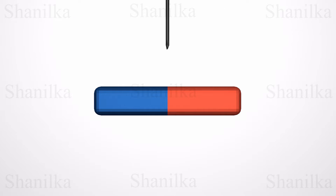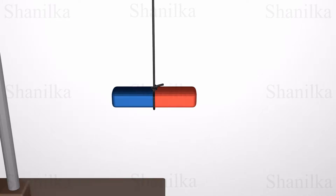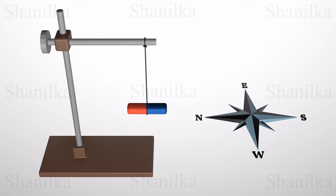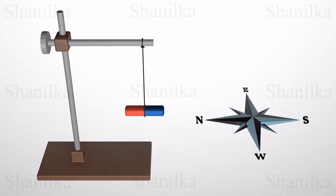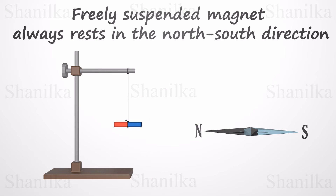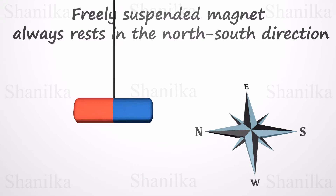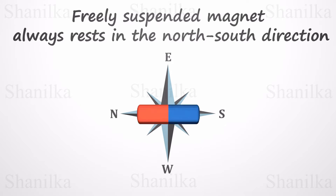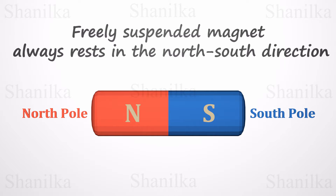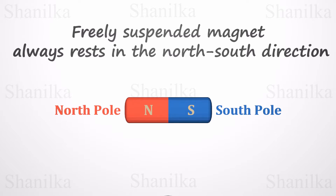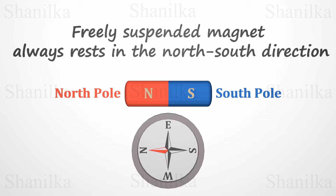When a freely suspended magnet comes to rest, it always rests in the north-south direction. The direction that points to the geographic north of the earth is called the magnet's north pole, and the direction pointing to the geographic south is called the magnet's south pole. This property is especially useful in navigation — the magnetic compass is built based on this.